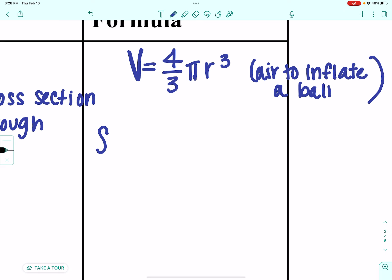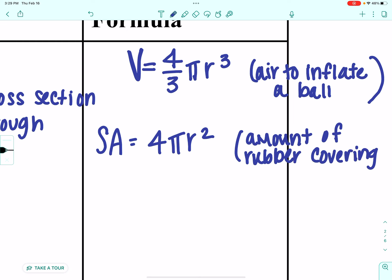When we talk about the surface area of a sphere, we're going to have 4 pi r squared. And this would be like the amount of rubber covering a basketball. Could be the leather on a baseball. All sorts of things. So, let's go use them. Let's go find some spheres.